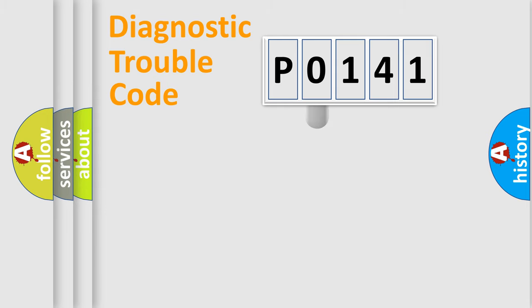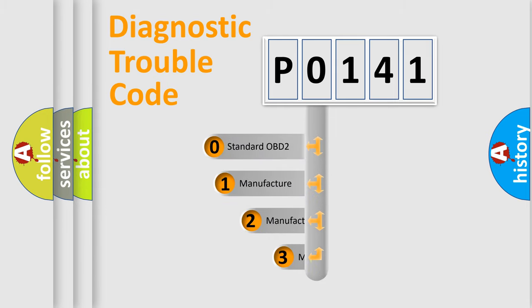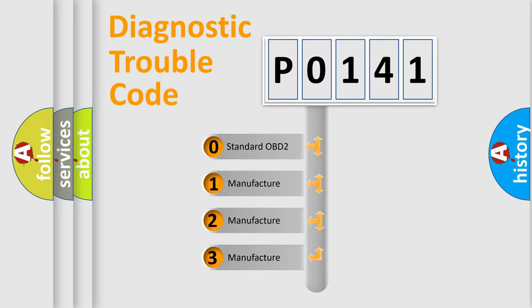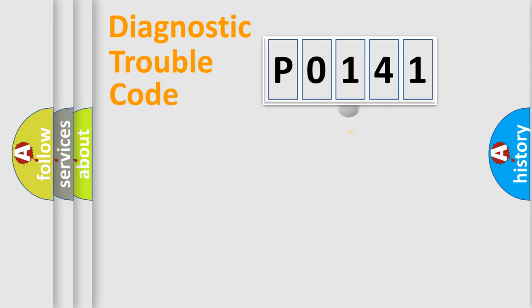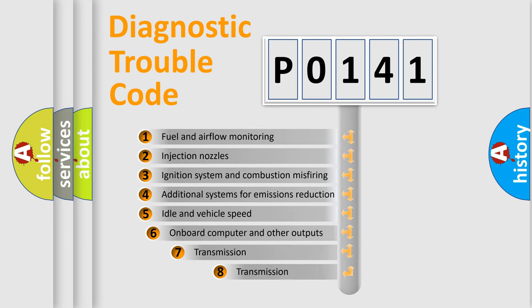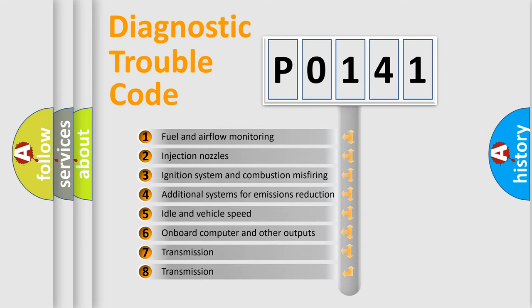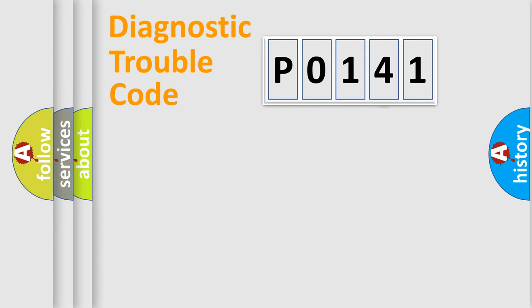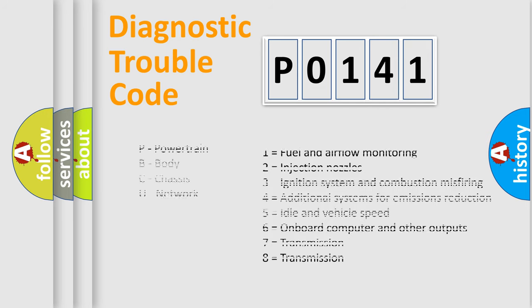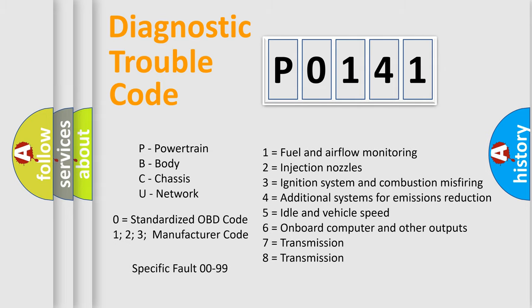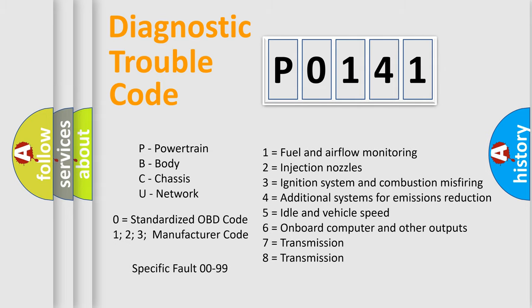This distribution is defined in the first character of the code. If the second character is expressed as 0, it is a standardized error. In the case of numbers 1, 2, or 3, it is a more specific car-manufacturer error. The third character specifies a subset of errors. Only the last two characters define the specific fault of the group, and this division is valid only when the second character code is 0.